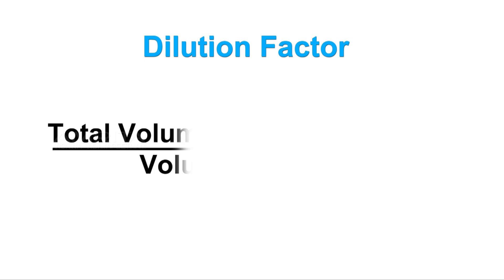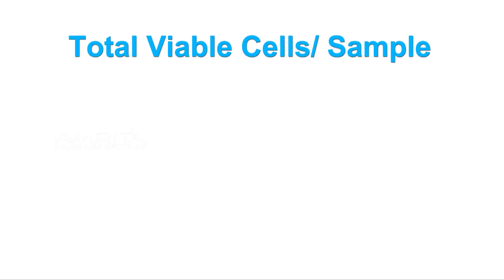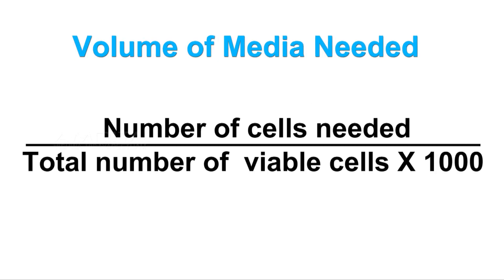Dilution factor equals total volume (volume of sample plus volume of diluting liquid) divided by volume of sample. Total viable cells per sample equals viable cells per milliliter times the original volume of fluid from which the cell sample was removed. Volume of media needed equals number of cells needed divided by total number of viable cells times 1000.